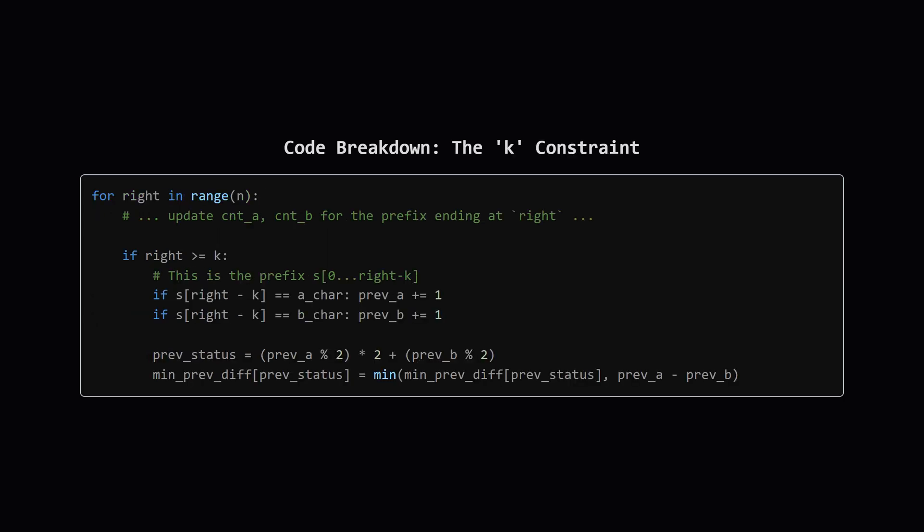Now for the trickiest part, handling the length constraint K. A substring must be at least K characters long. This means that if our substring ends at position right, its starting point left must be at least K positions behind it. So, as our right pointer moves forward, we can only consider left prefixes that are far enough in the past. In the code, when right gets to be K or more, it means the prefix that ended K steps ago is now a valid candidate for a left endpoint. At this point, we update our min previous diff table. We calculate the state and value for that newly available prefix, and if it's the best value we've seen for that state so far, we record it.